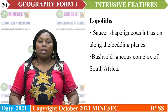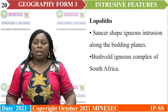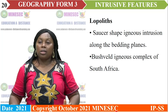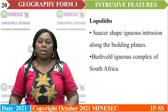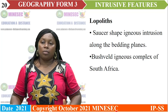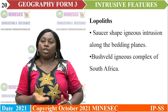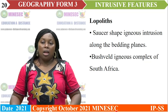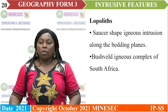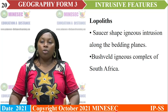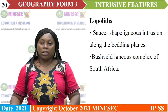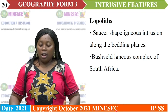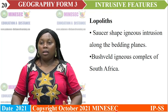The next intrusive feature is the lopolith. Lopoliths are saucer-shaped igneous intrusions along the bedding planes. An example of a lopolith is the Bushveld igneous complex of South Africa.